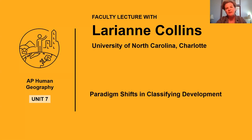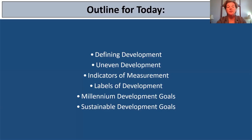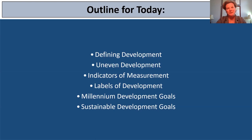More specifically, we will talk about the paradigm shift and how we actually classify levels of development. Here's a brief outline of what we'll go through in this video: we will define development, talk briefly about uneven development, discuss the indicators we use for measurement, different labels and terminology, and then finish up with Millennium Development Goals and Sustainable Development Goals.